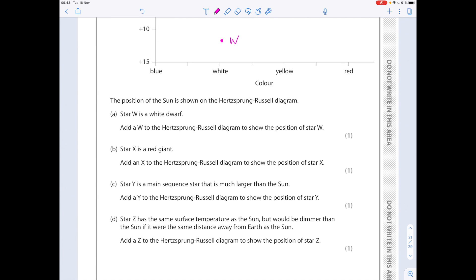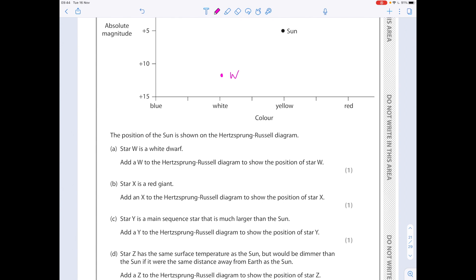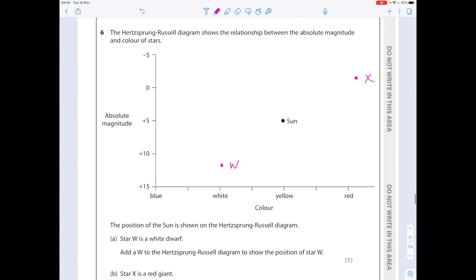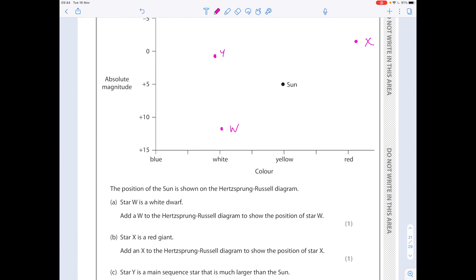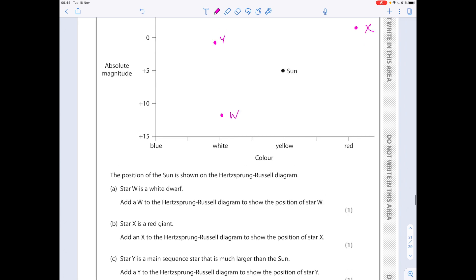Star Y is a main sequence star that is much larger than the Sun. Add a Y to the Hertzsprung-Russell diagram to show the position of star Y. So the main sequence appears over here on an angle. So it needs to be, because it's much larger, it needs to feature on this side. So again, not being too fussy with our position here. I'm going to pop it there.